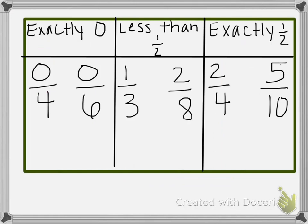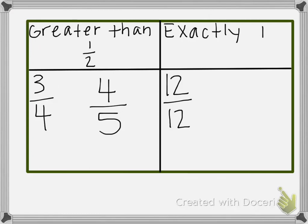Let's look at what we've got. We have exactly 0: 0 fourths and 0 sixths. Less than 1 half: 1 third and 2 eighths. Exactly 1 half: 2 fourths and 5 tenths. Greater than 1 half: 3 fourths and 4 fifths. And exactly 1: 12 twelfths. You should start to see some patterns, and the more you look at this, the more patterns you'll find.